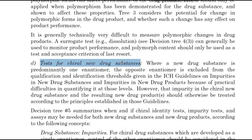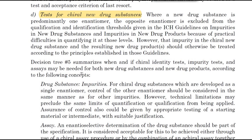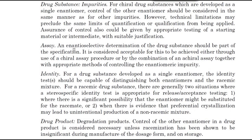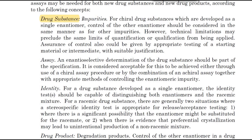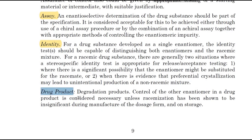Polymorphism may also include solvations or hydrations of the products. For chiral new drug substances, a chiral new drug substance may be predominantly one enantiomer; the opposite enantiomer is considered an impurity. Below the identification threshold, impurities in new drug substances and in new drug products may be excluded from testing because of practical difficulties in qualifying them at those levels. For drug substances, the specification typically includes impurities and assay; for drug products it includes assay, identity, water content, inorganic impurities, and microbial limit testing.